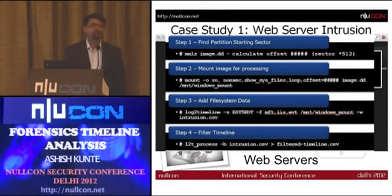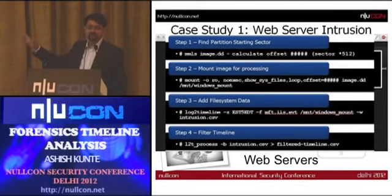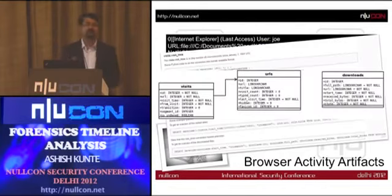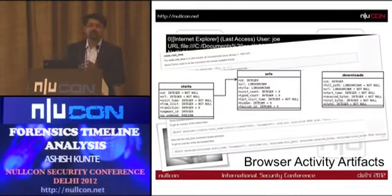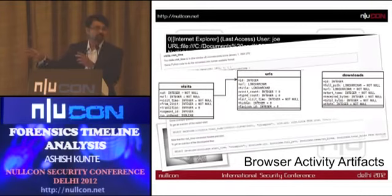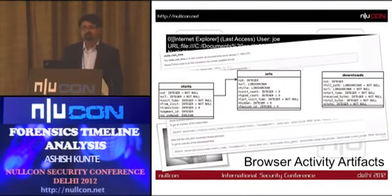Internet Explorer has a binary file called index.dat, which has a structured header with hash values containing interesting information. For a single URL, there are two timestamps stored in different index.dat files — one in the default location and one inside the user's IE history folder. You can correlate these two timestamps for a single URL to find out what the browser was doing at a particular point in time.